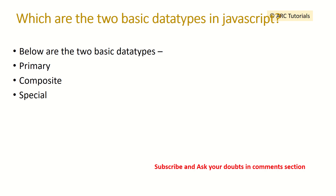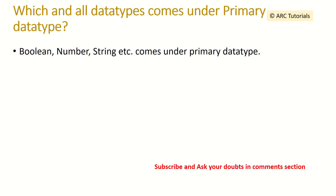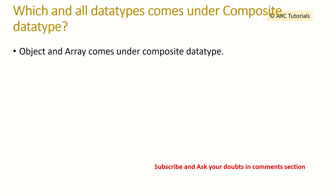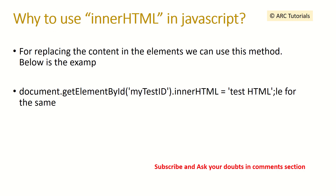Which are the two basic data types in JavaScript? There are two basic types: primary and composite, and there can be others which are special. Numbers, boolean, and string are primary data types. Composite data types — also called special or object and array — come under composite data types.